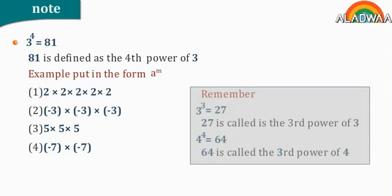Remember: 3 to the power of 3 equals 27. 27 is called the third power of 3. 4 to the power of 3 equals 64. 64 is called the third power of 4.